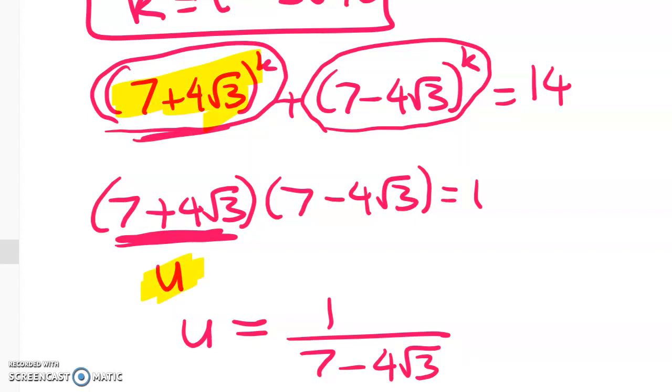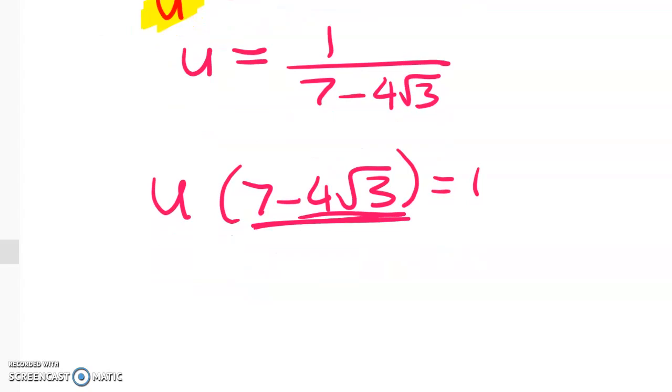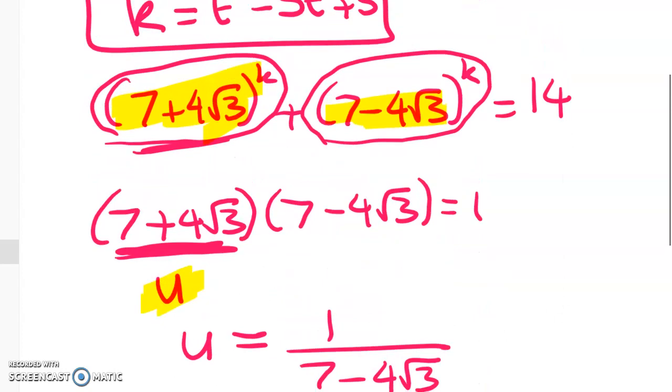We just have to figure out a way to do something with this one. So we've got u times 7 minus 4 root 3 is equal to 1. So we can rewrite this one, 7 minus 4 root 3, as 1 over u and suddenly the whole problem is going to start to collapse. So let's go back and look at the equation that we've got to fix up. It's this one here.